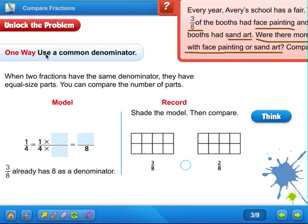One way, use a common denominator. Remember, the denominator is the lower number. Numerator is the number on top. When two fractions have the same denominator, they have equal size parts. You can compare the number of parts.